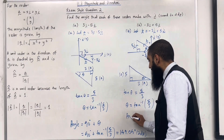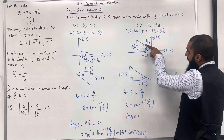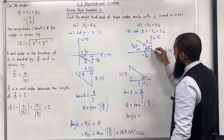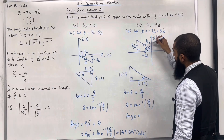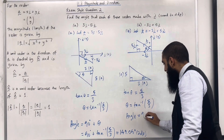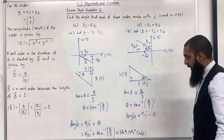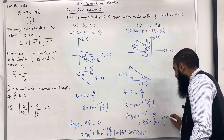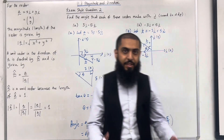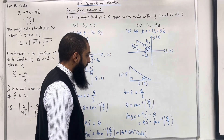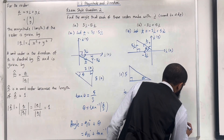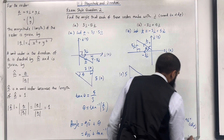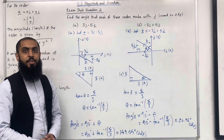The full angle from the j-axis is 90°, so the required angle is 90° − θ, which is 90° − tan⁻¹(5/3). Putting this into the calculator and rounding to two decimal places gives 30.96°. That completes exam style question 2.